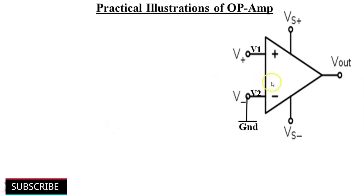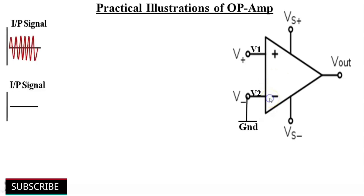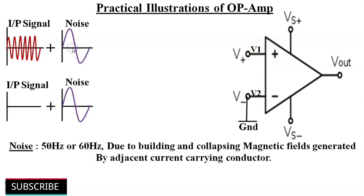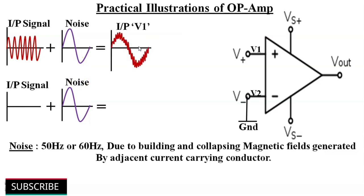The operational amplifier as a differential amplifier rejects noise and static voltages. If the inverting terminal V2 is grounded and a signal is applied at V1 (the non-inverting terminal), a low-frequency noise voltage also appears at the inputs. This 50 Hz or 60 Hz noise is produced due to building and collapsing magnetic fields generated by adjacent current-carrying conductors. The resultant waveform at V1 contains this noise; if amplified directly, the 50 Hz noise in the output would be stronger than the desired signal.